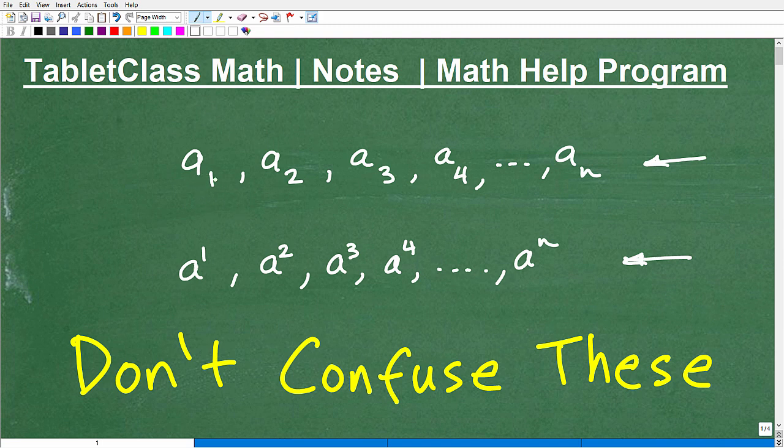We have this variable A, then we have the one down low in the bottom right. But then over here, we have A, and the one is up in the top right. So this is the top right, and this is the bottom right.